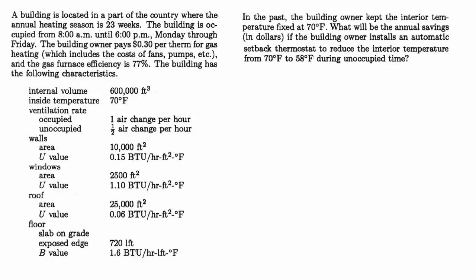In the past, the building owner kept the interior temperature fixed at 70 degrees. What will be the annual savings if the building owner installs an automatic setback thermostat to reduce the interior temperature from 70 degrees to 58 degrees during unoccupied time? There are two ways energy is saved: they wouldn't have to condition outside air all the way up to 70 degrees, just to 58 — a big win on the ventilation side. Also, reducing the indoor temperature by 12 degrees means less conduction loss through the walls, windows, roof, and floor.